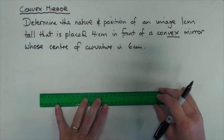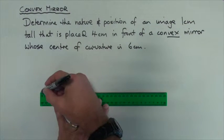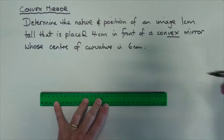So again, we start by drawing our template. Now our template will consist of a horizontal line, which we'll label principal axis, followed by a vertical line, which is going to be the mirror.